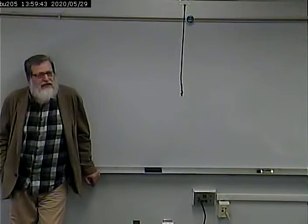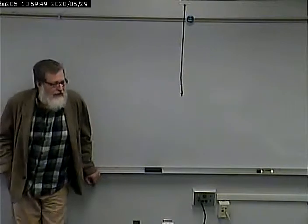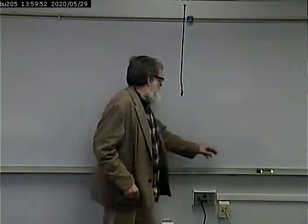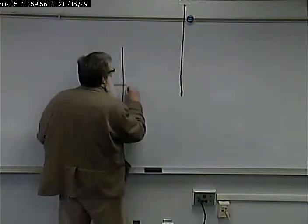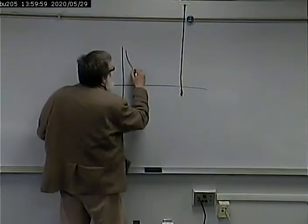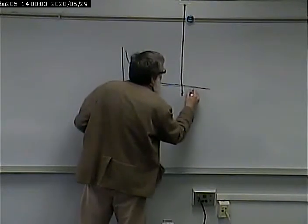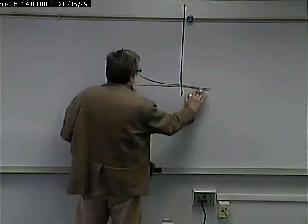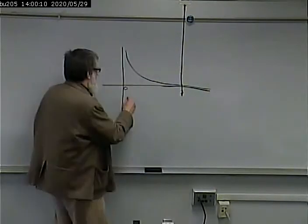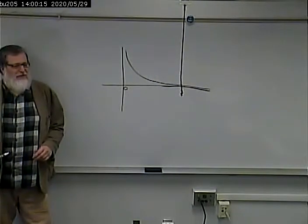I guess in theory that probably is a correct statement. In practice though, my experience is that confusion has an asymptotic relationship to the x-axis. Therefore, it never quite hits zero. So no matter what, there's always some confusion about something.